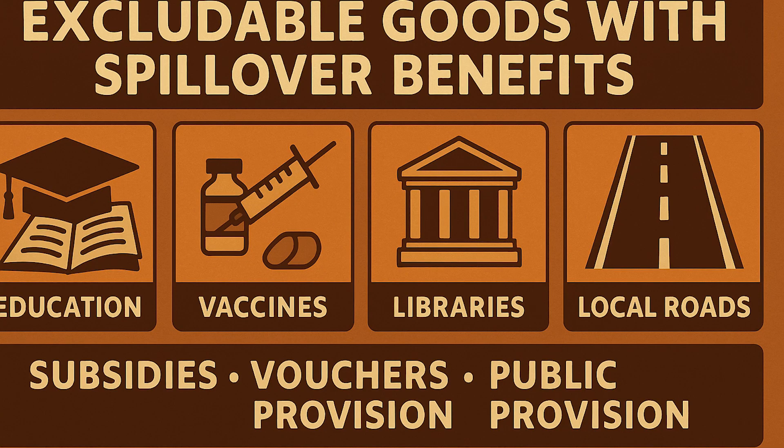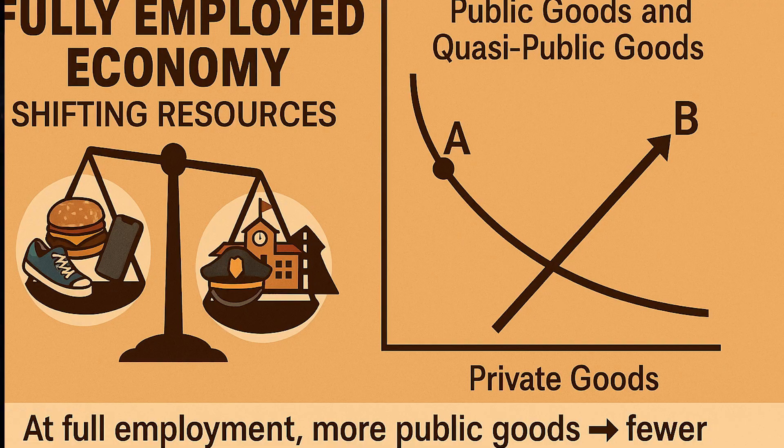Some goods are technically excludable but create big spillover benefits — think education, preventive health care, libraries, and local roads. Left to the market, we'd under-produce them, so governments often step in or subsidize to raise output closer to the social optimum. If the economy is fully employed, shifting toward public and quasi-public goods means shifting away from some private goods: taxes reduce private purchasing power and government redirects those resources into public projects.